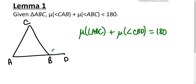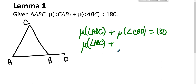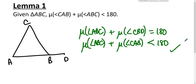Angle CBD is an exterior angle to triangle ABC, so the measure of angle CBD must be bigger than the measure of angle CAB. If we replace the measure of angle CBD with the measure of angle CAB, this sum is less than 180. Nothing too fancy there.